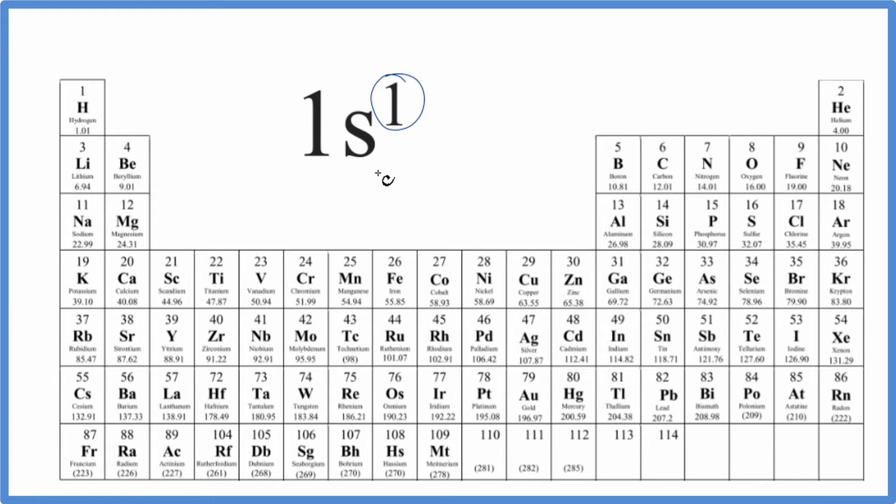So I'm just looking for atomic number one, which is right here. Atomic number one means it has one proton. Since it's neutral, it'll also have just one electron. So the electron configuration 1s1, that's hydrogen.